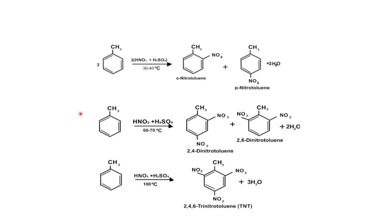In the presence of a methyl group, when HNO₃ and H₂SO₄ are used, nitration will form 2,4-dinitrotoluene or 2,6-dinitrotoluene at the ortho and para positions. Further treatment at 100°C will form 2,4,6-trinitrotoluene.